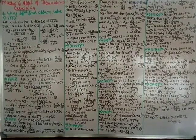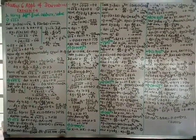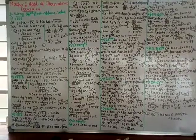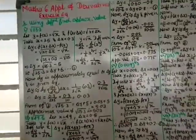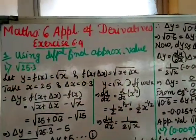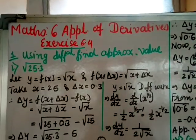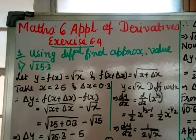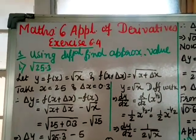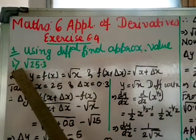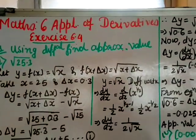Mathematics class 12, chapter 6, application of derivatives, exercise 6.4, question number 1. Using differentials, find the approximate value of the given functions up to 3 decimal points. Number one is square root of 25.3.